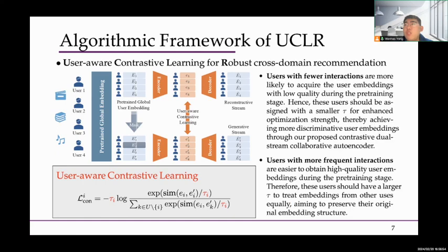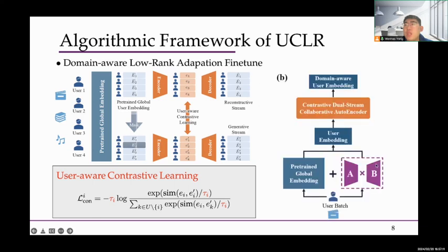Our motivation stems from the fact that the model requires varying degrees of force to achieve separable embedding spaces for each user due to imbalanced interactions among different users. To achieve this goal, we adopt individualized temperatures for different users. To further enhance the performance of UCLEAR, we also introduce low-rank adaptation to fine-tune the whole framework of UCLEAR within each domain.